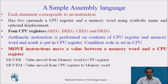The move instruction moves a value between a memory word and a CPU register. There are two forms: MOVE R, which moves the value from the memory word to the CPU register, and MOVE M, which moves the value from the CPU register to the memory word.